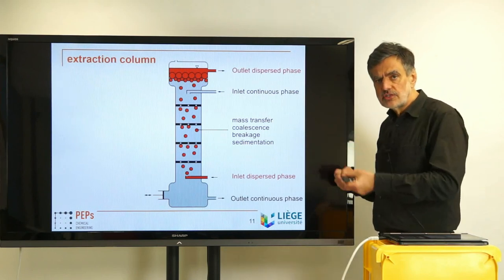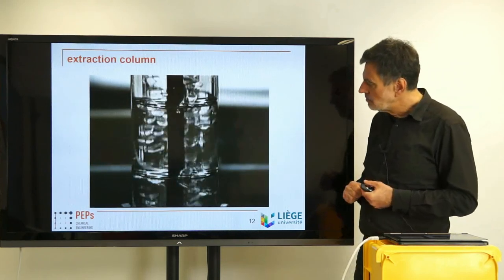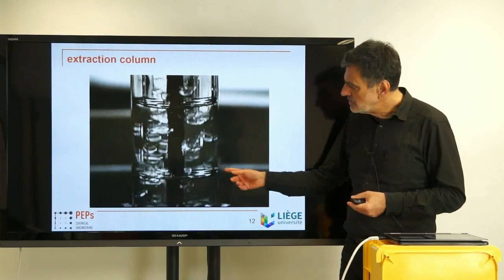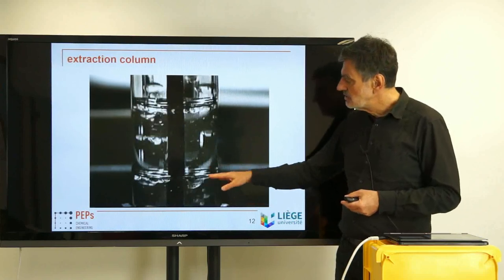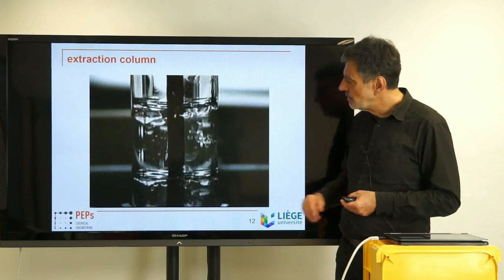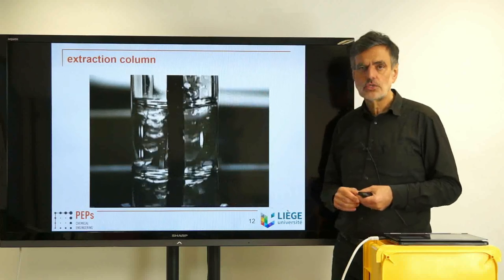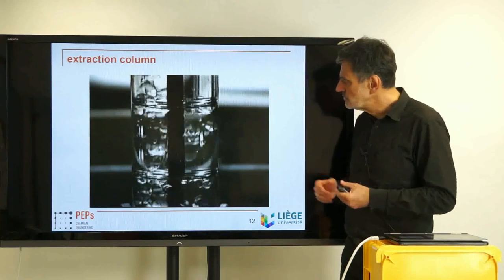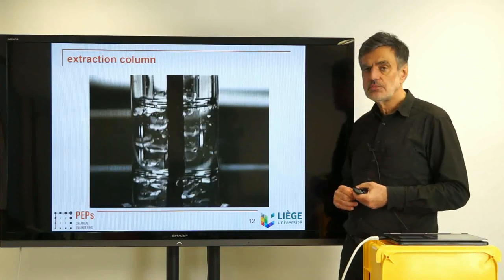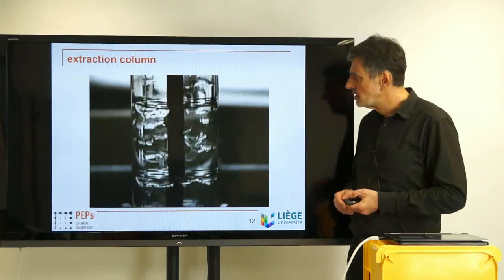To give you a more vivid picture, I want to show a video taken at a pilot plant extraction column — a sieve tray column with a 5 cm diameter. In this case the sieve trays move up and down rather than the liquid being pulsated. You can see the droplets sedimenting toward the top, while the continuous phase flow is not visible. This 5 cm pilot plant diameter is sufficient to scale up to real technical equipment.